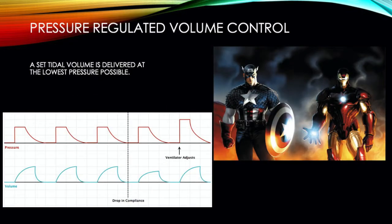Pressure regulated volume control is kind of the best of both worlds. The desired tidal volume is set along with an upper PIP limit, and the ventilator will attempt to administer the entire tidal volume at the lowest pressure possible without exceeding the set PIP limit. One of the major disadvantages to PRVC is that it takes a few breaths to reach the set tidal volume.